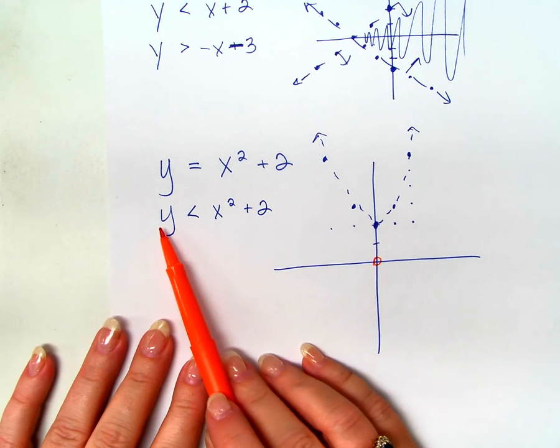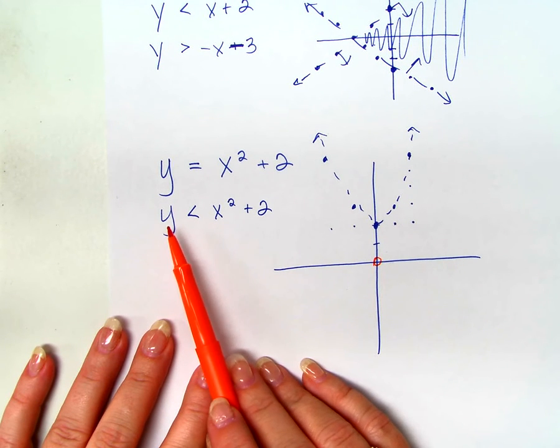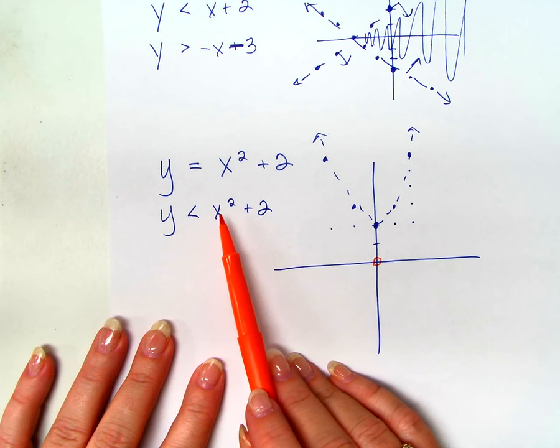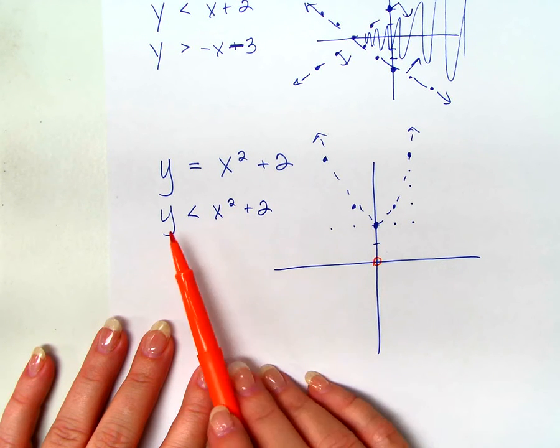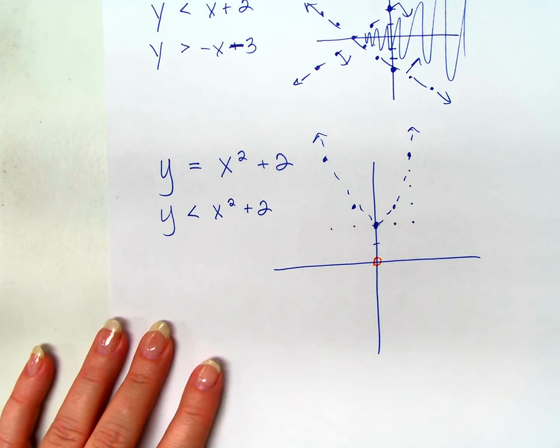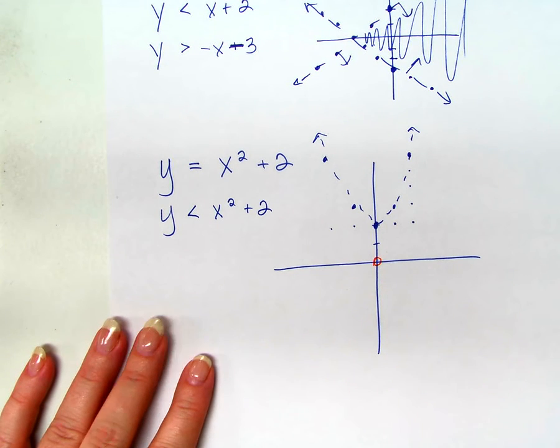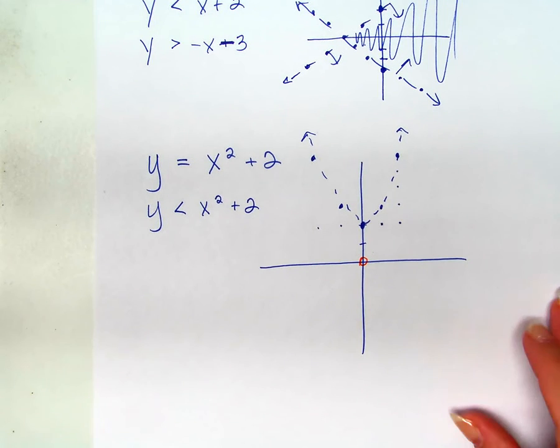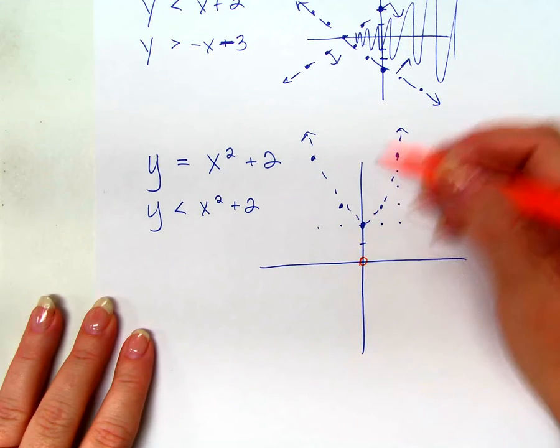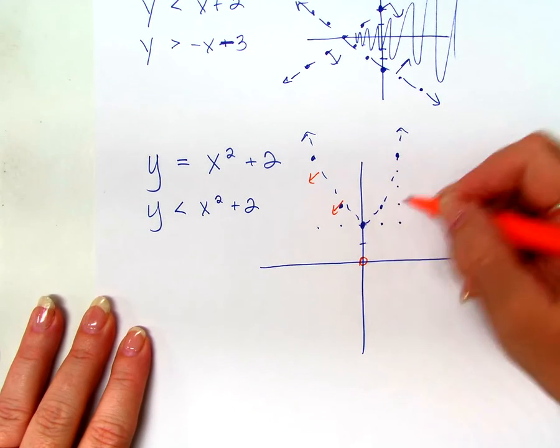So, if I plug this into my inequality, I would get zero is less than zero squared, zero, zero, plus two. So, zero is less than two. That's true. That is true. So, I shade where it's true. So, in this particular parabola, would I shade inside or outside? Outside. So, all this stuff right out here.